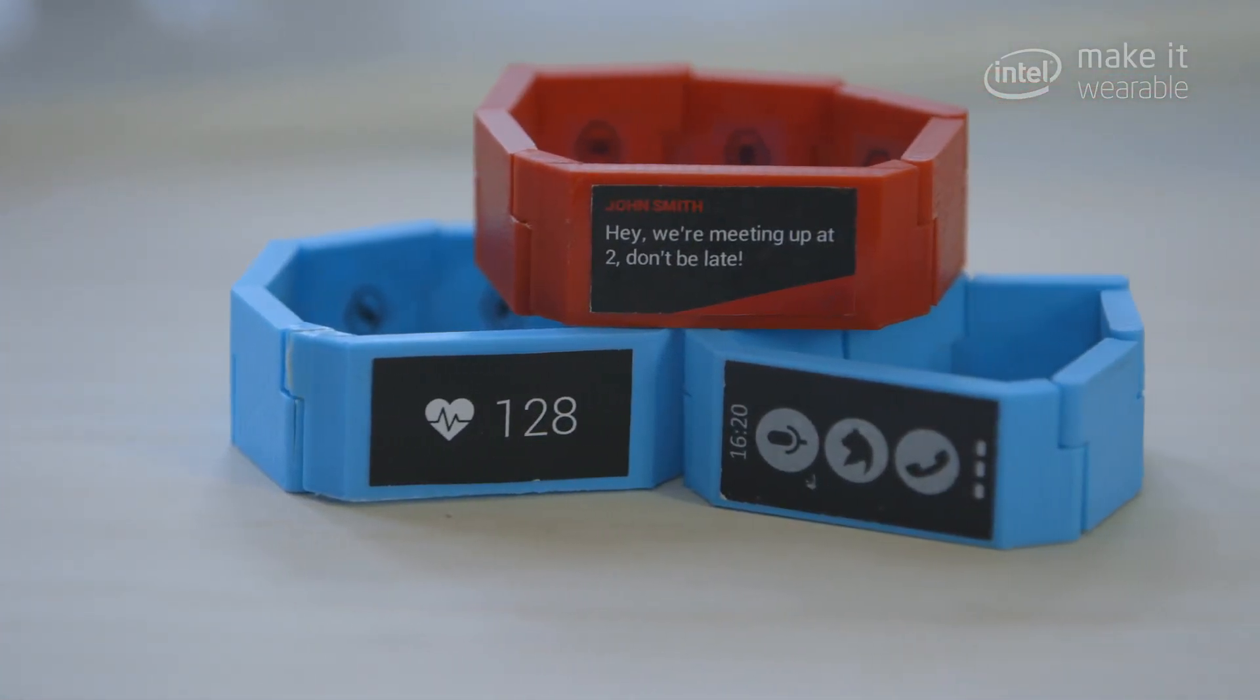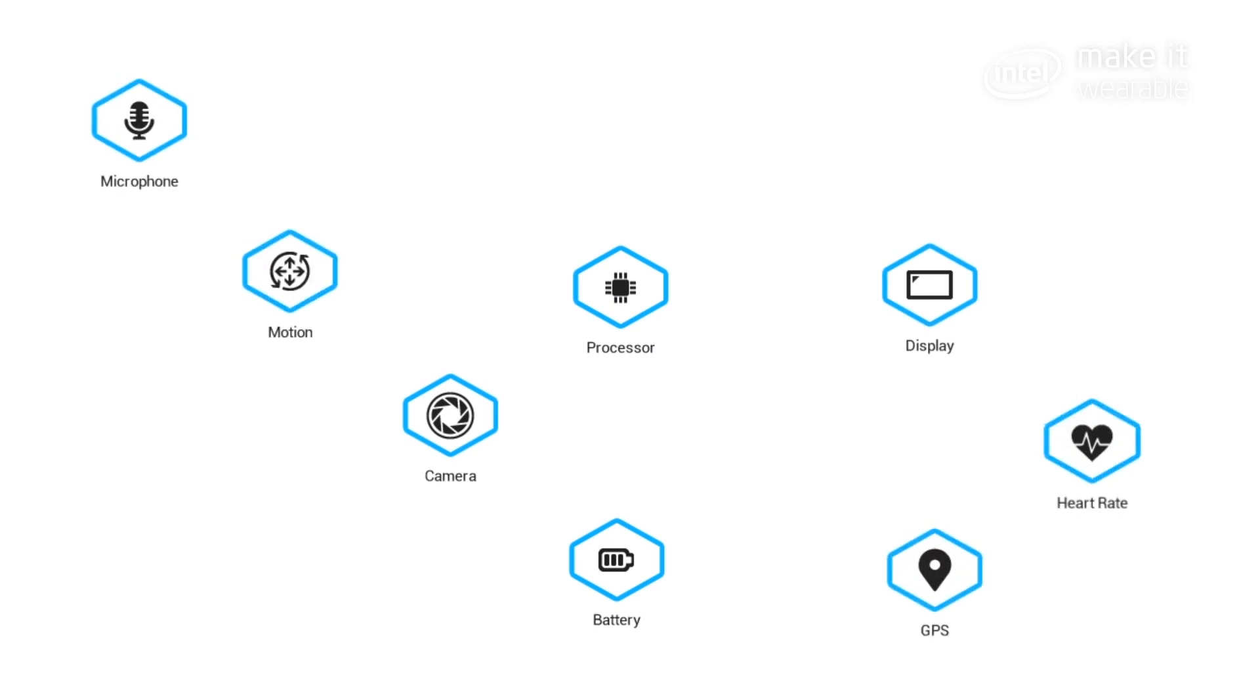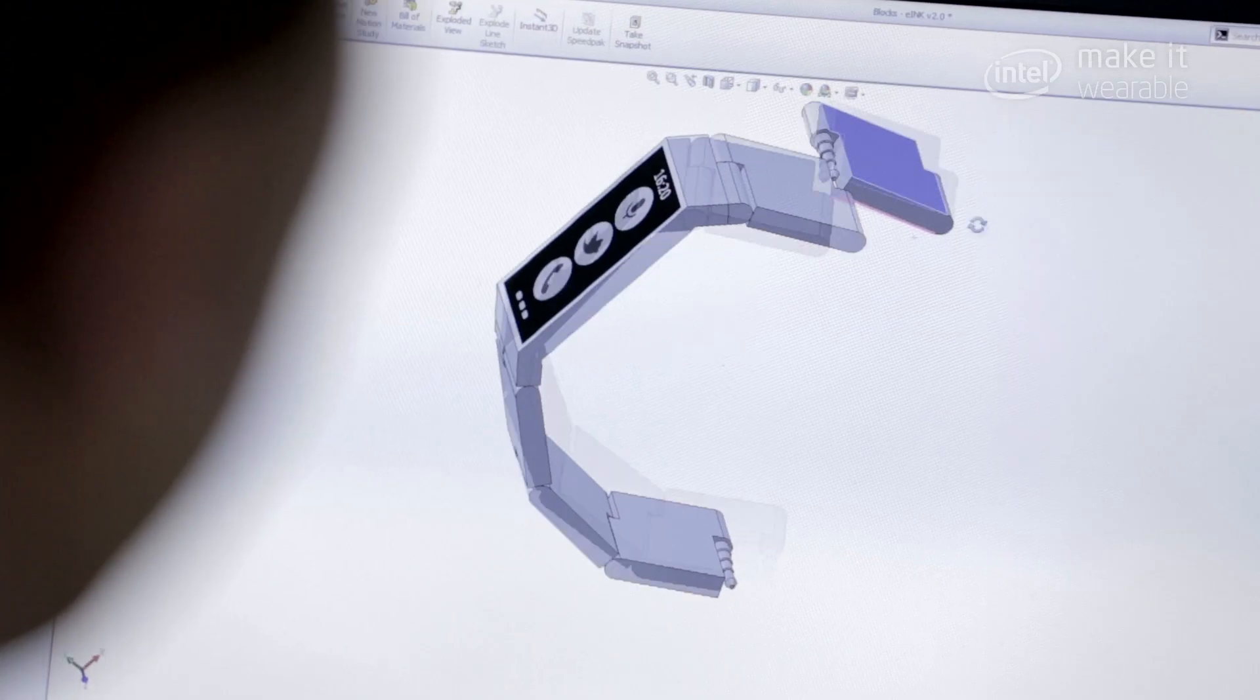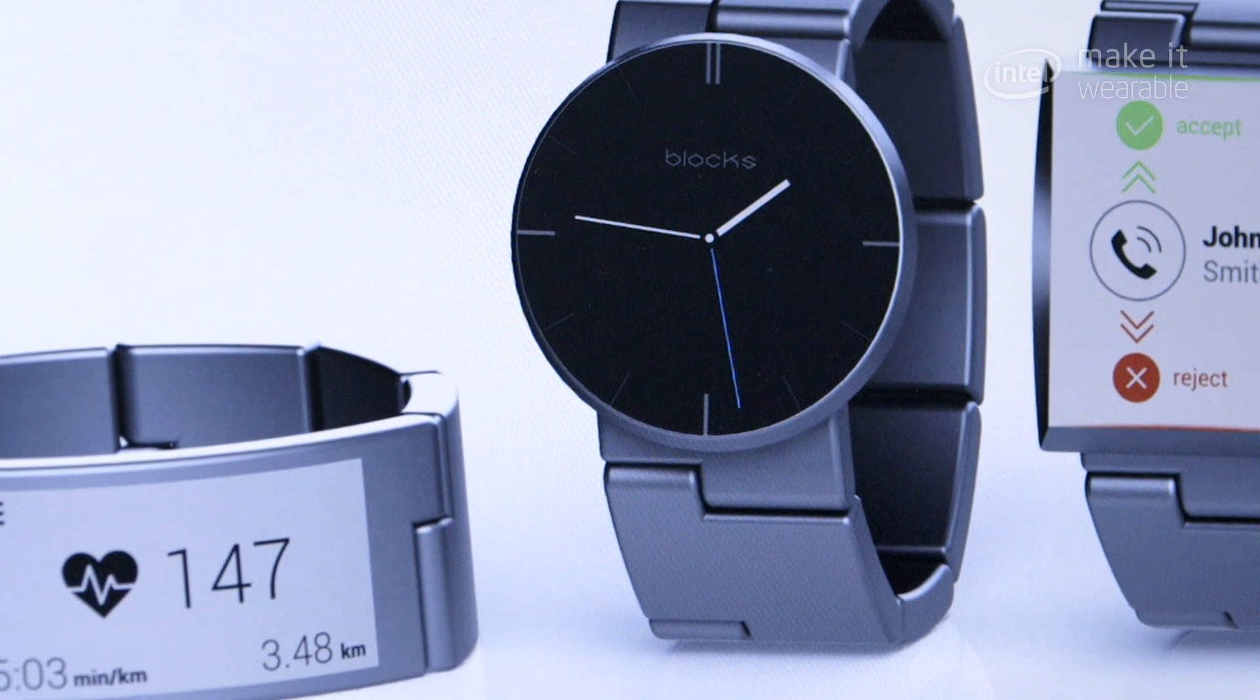The best thing about VLOX is that if someone comes up with a new sensor for gesture recognition or maybe a new heart rate sensor, they can simply embed it into a single block. When you have a new hobby or you want a new watch face, all you need to spend is half of what you would spend for a new device.